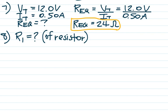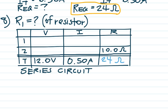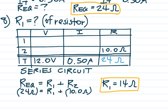Here's the table with given values: total voltage is 12 volts, total current is 0.5 amps, the bulb's resistance is 10 ohms, and it's a series circuit. We already found the equivalent resistance in number seven — 24 ohms. In series, resistances add up to the total, so the resistance of the first resistor is 24 minus 10, which equals 14 ohms.